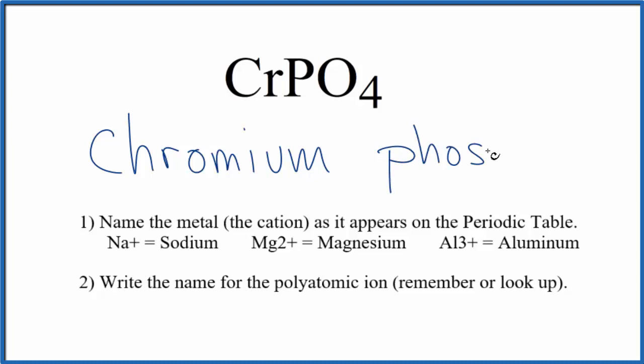So far, we have a name chromium phosphate for CrPO₄, but we said that chromium, that's a transition metal, and with transition metals, they can have different ionic charges depending what they're bonded to. So what we need to do is figure the charge of the chromium by looking at the phosphate.